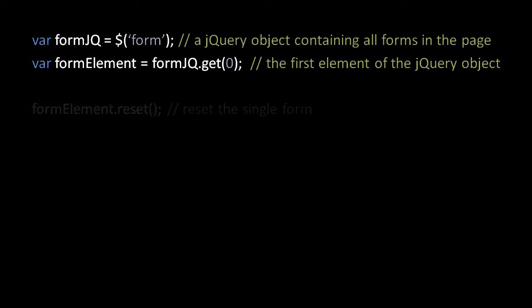Now that we have the actual DOM element object representing the form, we can invoke the reset method, which is something that form element objects in the DOM have but jQuery objects do not.